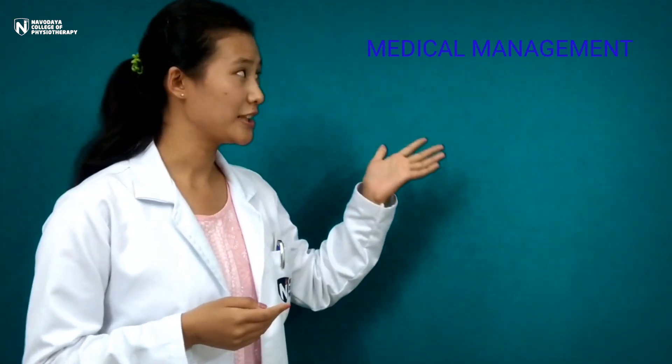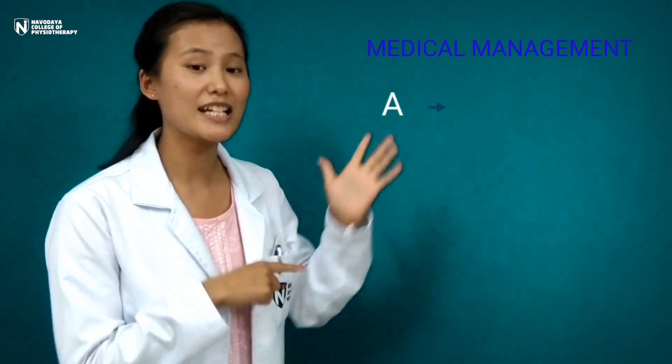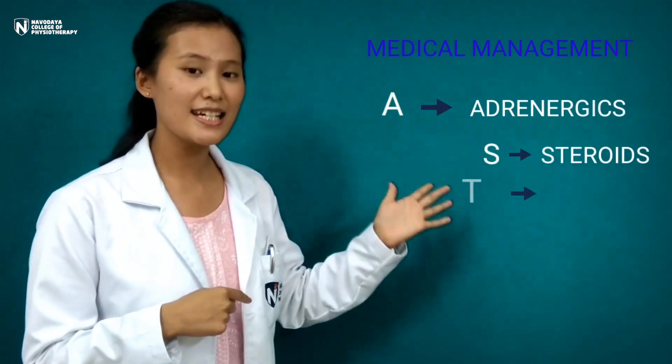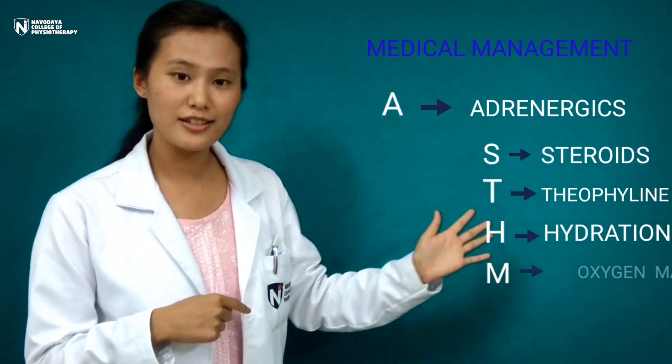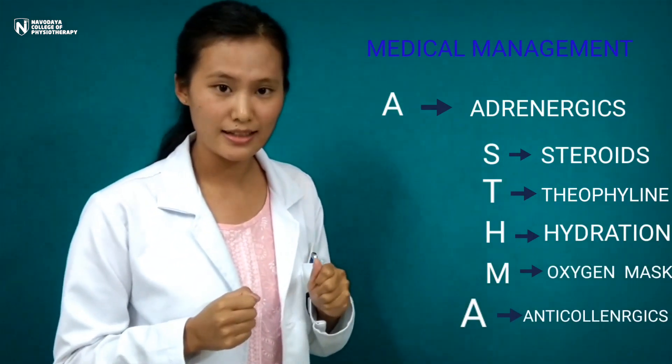Medical management can be remembered using the mnemonic ASTHMA: A for adrenergics, S for steroids, T for theophylline, H for hydration, M for oxygen mask, and A for anticholinergics. Drug therapy includes relievers (short-acting beta agonists), controllers (long-acting beta agonists), and preventers (steroids). These are all delivered through MDI — the metered dose inhalation method.